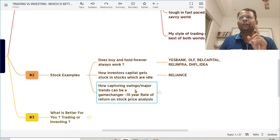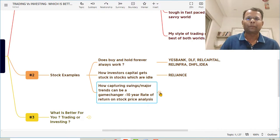The third principle we are going to see is how capturing swings or major trends can be a game changer. Ten year rate of return on stock price analysis. See, we invest or trade to make money, to get a decent return on our invested capital. That's our ultimate aim.